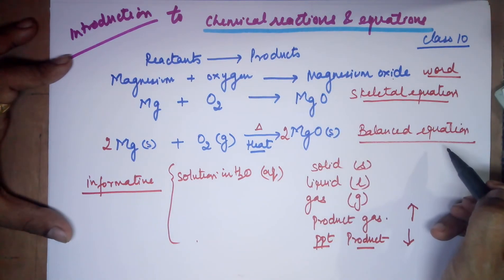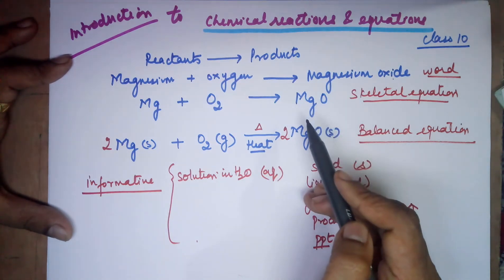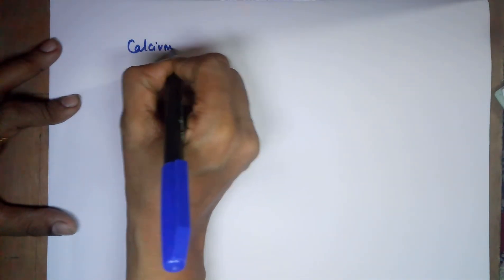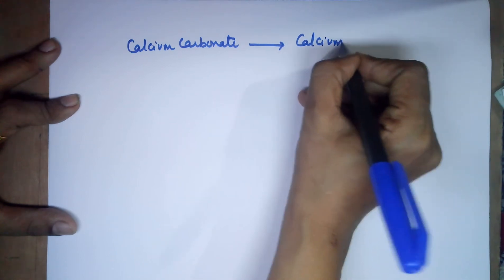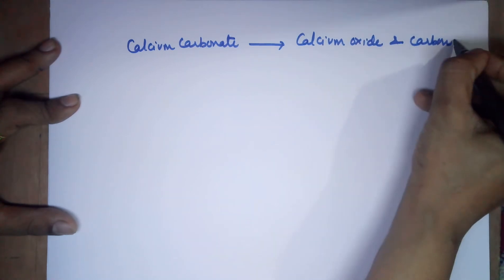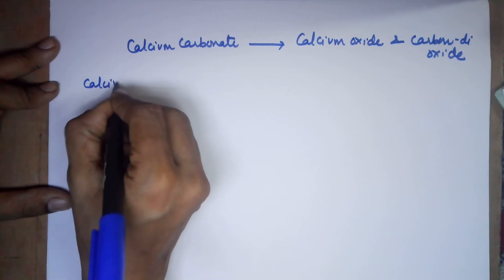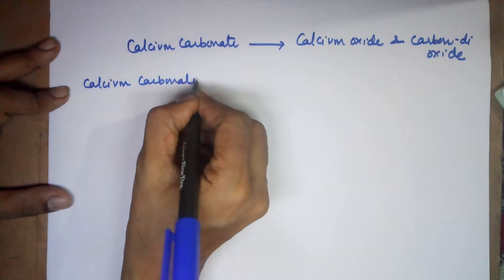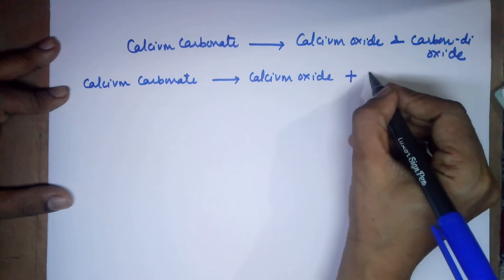We now know how to write a chemical equation for a given chemical reaction. I will take one more example to make it a little more clear. My second example is with calcium carbonate — my reactant is calcium carbonate, which transforms into calcium oxide and carbon dioxide. We will start with the word equation first: calcium carbonate gives calcium oxide plus carbon dioxide.